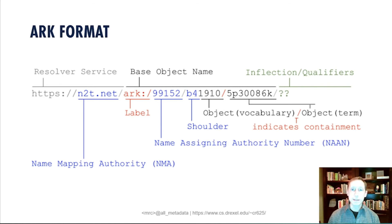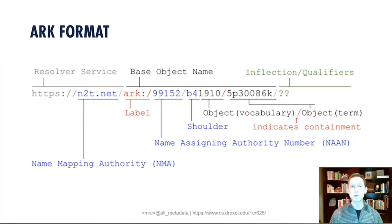The penultimate component in the diagram is the randomly generated unique ID for the term. In the context of the entire ARC, it is unique. The last digit is a check digit which is helpful in detecting transcription errors. There is no required process for minting an ARC, but there is a helpful utility. The last portion of the ARC indicates an inflection or qualifier. The question mark representation should return some metadata associated with the information object. In addition, qualifiers can be appended for a variety of interesting results. I'll show some examples near the end of the presentation.